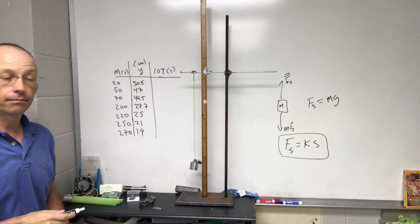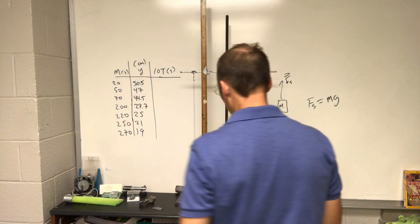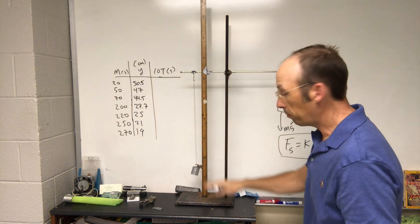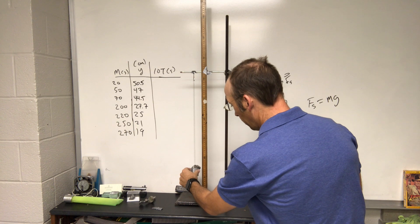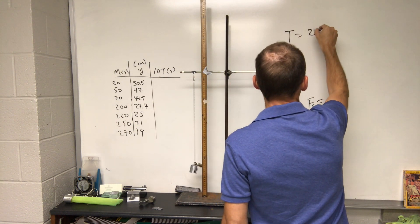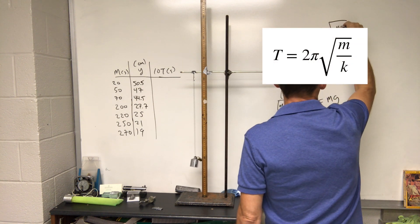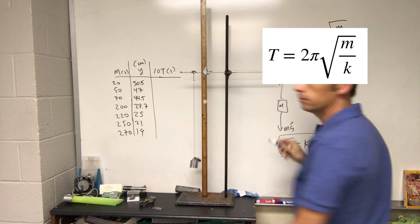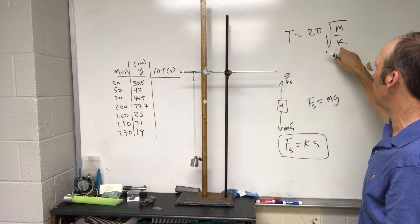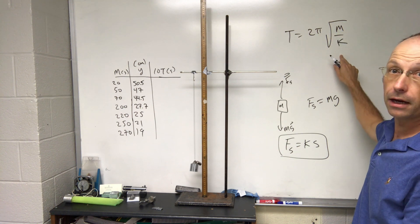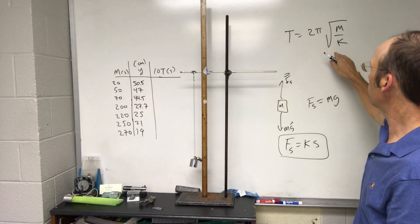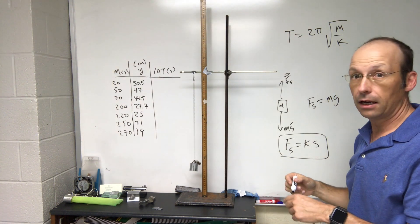The other thing is if I take this and oscillate it, the period of oscillation — the time it takes to go from here back to there, one complete oscillation — is T equals 2π times the square root of m over k. I want to collect period and mass data so I can again make a graph to find k. This is the part that everyone has trouble with, so I'm going to show you.